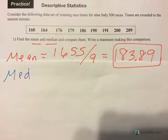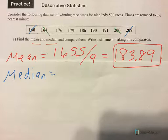Then we go to find the median. Remember, the median is the numbers put in order least to greatest, and we go to the middle. If we cross off a big and a small from each end, 186 is in the middle.